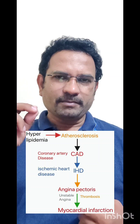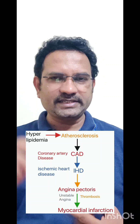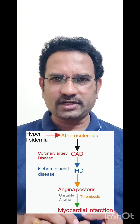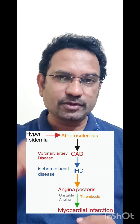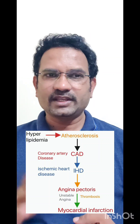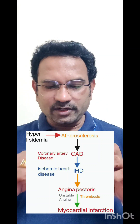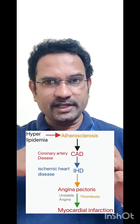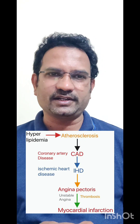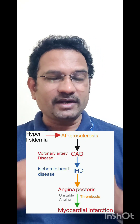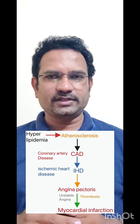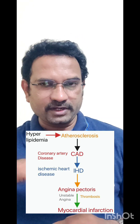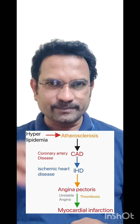It starts with hyperlipidemia. The most problematic lipid is LDL — low density lipoprotein — which is bad cholesterol. Because of this, it gets accumulated in coronary blood vessels, blocking blood flow. Blood vessels accumulate lipids in a condition called atherosclerosis. When atherosclerosis affects the coronary blood vessels, it is called coronary artery disease. So the progression is: hyperlipidemia → atherosclerosis → coronary artery disease.